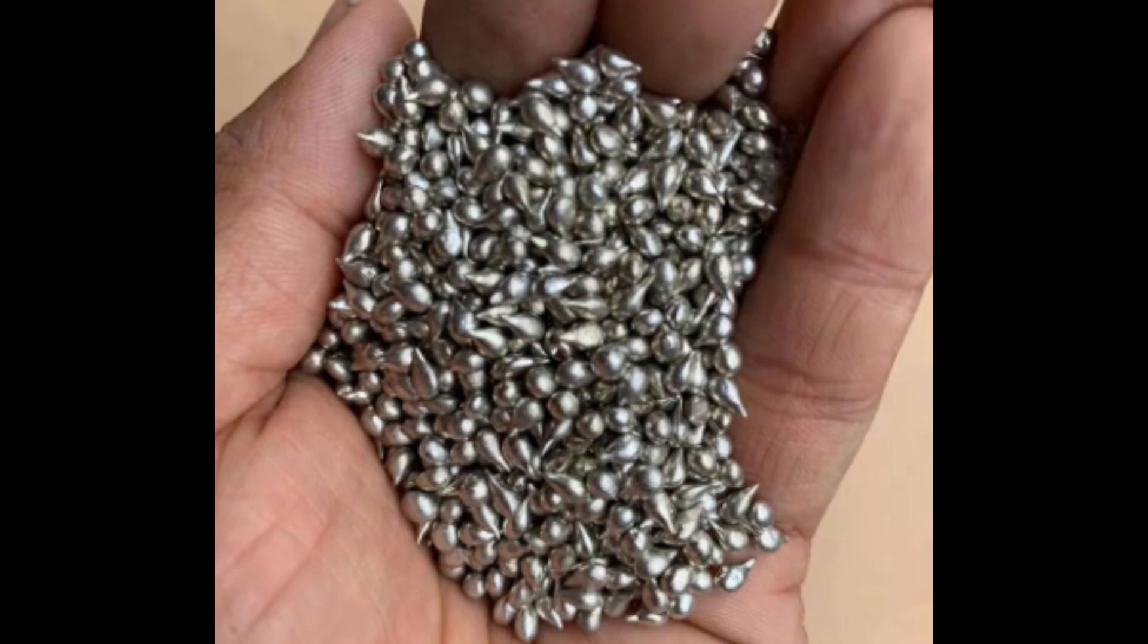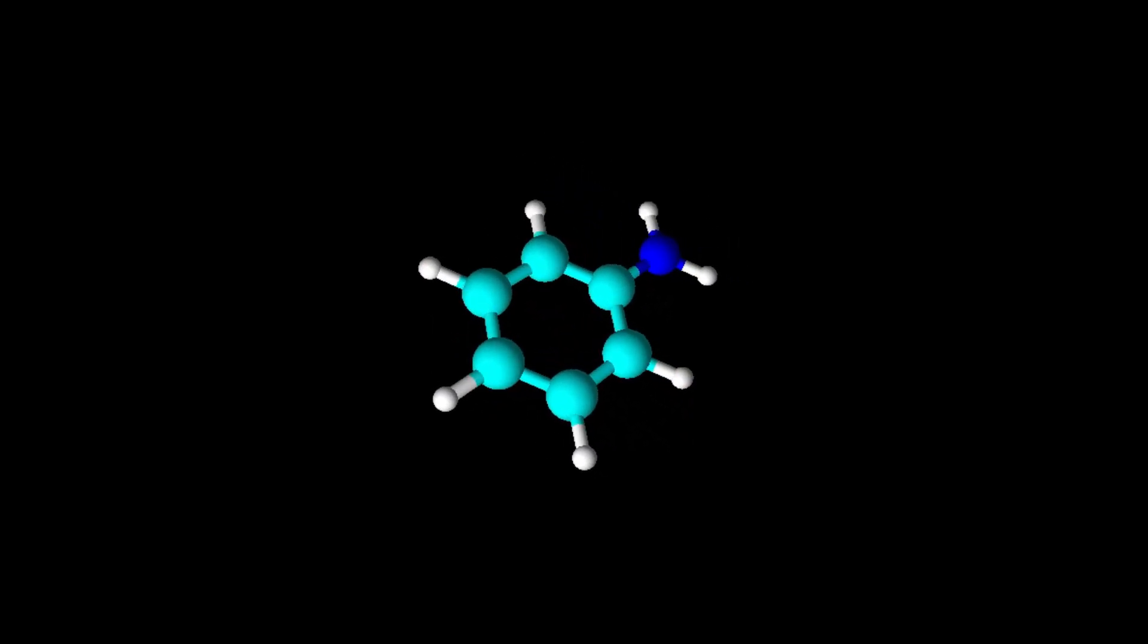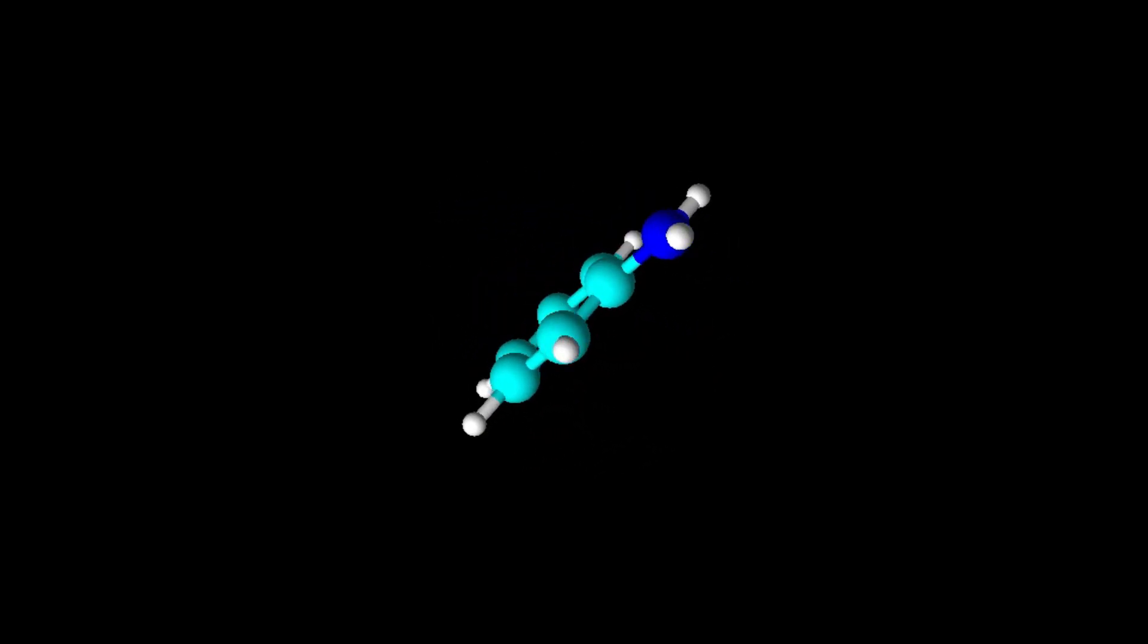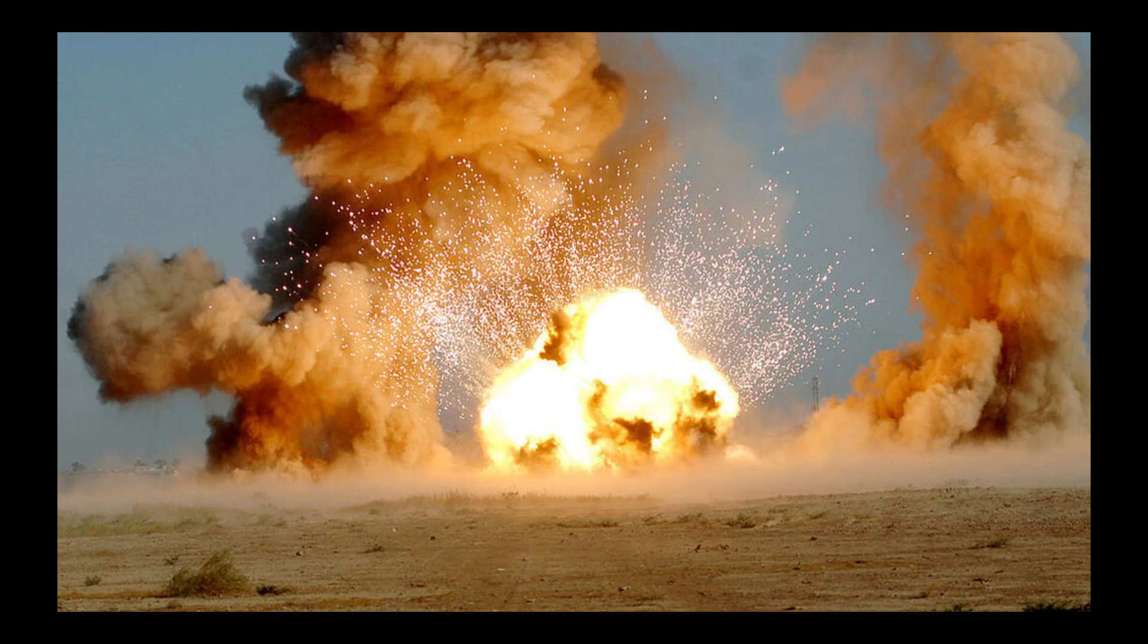This method is three times cheaper than reducing nitrobenzene with tin metal. Tin is more expensive than iron. Aniline is the most important aromatic amine.